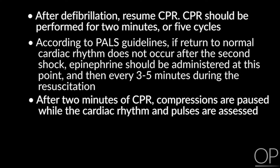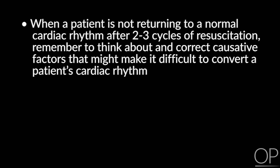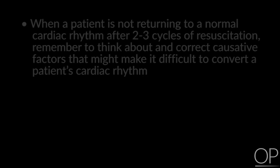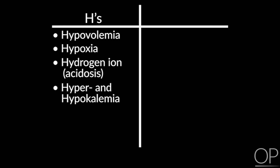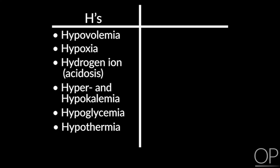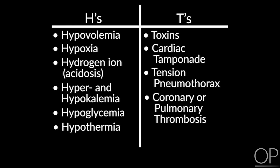After 2 minutes of CPR, compressions are paused while cardiac rhythm and pulses are assessed. When a patient is not returning to normal cardiac rhythm after 2–3 cycles of resuscitation, remember to think about correctable causative factors — the H's and T's. The H's include hypovolemia, hypoxia, hydrogen ion acidosis, hyper- and hypokalemia, hypoglycemia, and hypothermia. The T's include toxins, cardiac tamponade, tension pneumothorax, coronary or pulmonary thrombosis, and trauma.